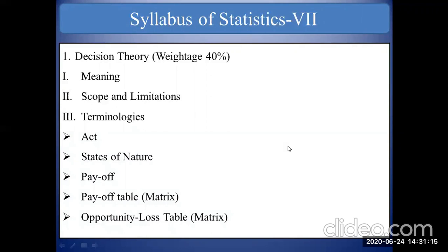Out of more than one alternative, which act is best - that we will decide using decision theory. Then we will see the scope and limitations of decision theory: when we can use this chapter and what are its limitations. We also need to understand terminologies. Before going into this chapter, you should know the meaning of act, states of nature, payoff, payoff table or matrix, and opportunity loss table or matrix.